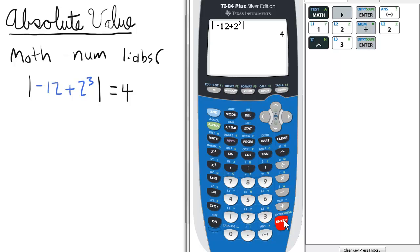If you don't have the most recent operating system, it may give you the expression ABS, open parentheses. You can just enter the same thing we did, negative 12 plus 2 raised to the third, you will get the same answer.